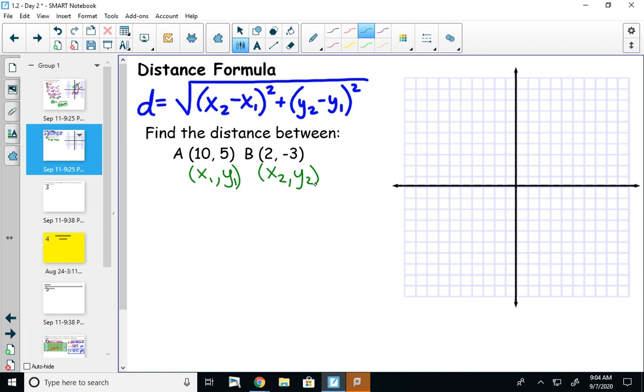So maybe let's plot these points just to see what it looks like so we can use it to check our work. A is going to be over 10 and up 5. B is going to be over 2 and down 3. So we're trying to find that distance.